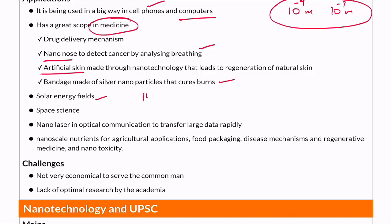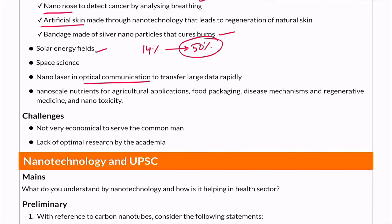In solar panels, the efficiency has been increased from 14 percent to 50 percent using nanotechnology. It is also widely used in space science. In optical communication, work is ongoing on nanolasers so that data can be transferred very rapidly. Additionally, nanoscale nutrients are used in agricultural applications to deliver the required amount of nutrients to plants. Nanotechnology is also applied in food packaging, disease mechanisms, and regenerative medicine.